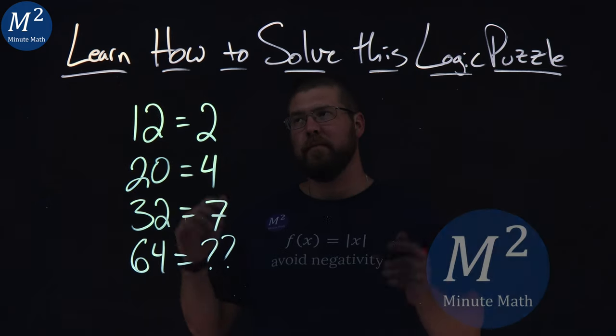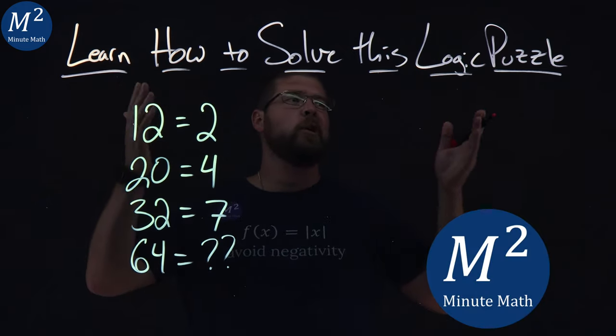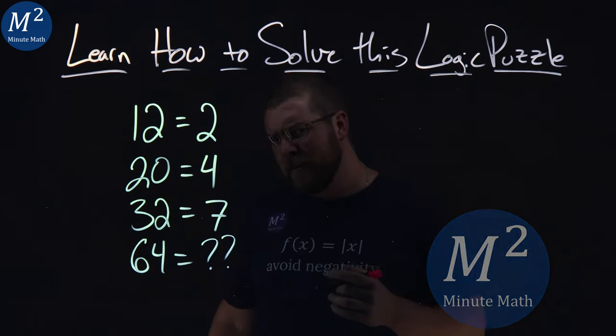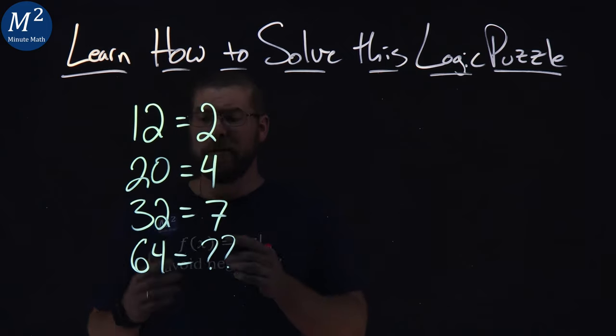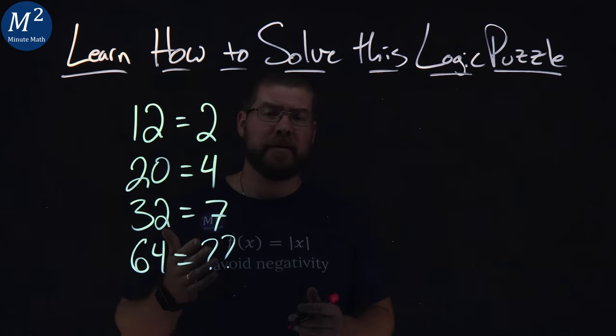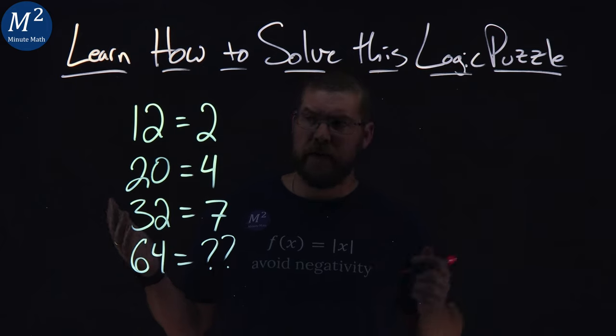Hi, I'm Sean Gannon, and this is MinuteMath. Let's learn how to solve this logic puzzle. Not too difficult at first. 12 equals 2, 20 equals 4, 32 equals 7, and 64 equals, well, that's what we get to find out here.